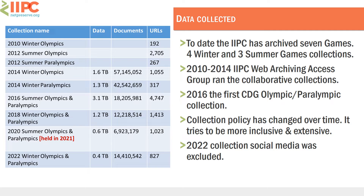In 2016 was the first CDG collection for Olympics and Paralympics. The Content Development Group was established in 2016 to collectively streamline the collaborative collection process. We've worked on lots of other collections in the past, including the refugee crisis in Europe, and COVID-19 is the biggest collection to date. The collection policies changed over time, and one key change from the 2022 collection was that social media was excluded for the first time, due to technical difficulties of archiving it through the Archive-It platform.